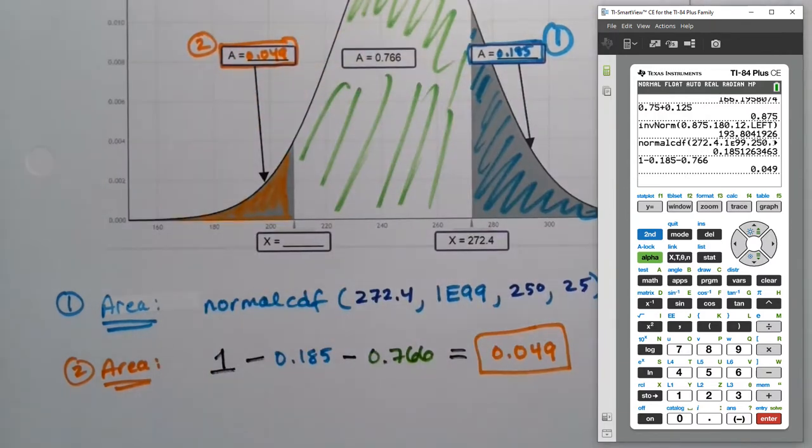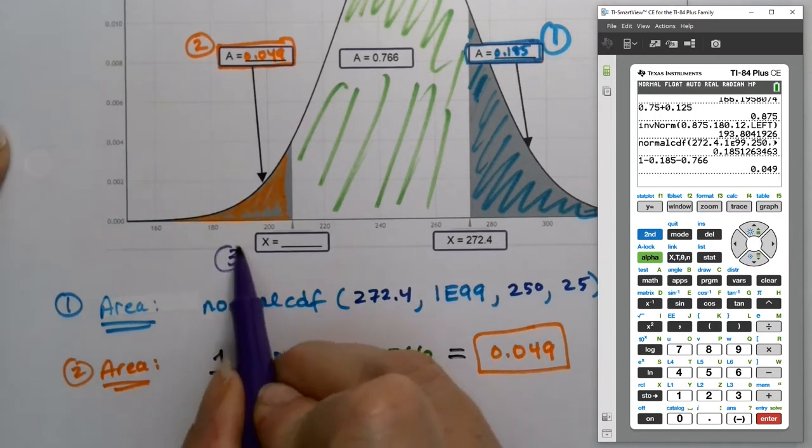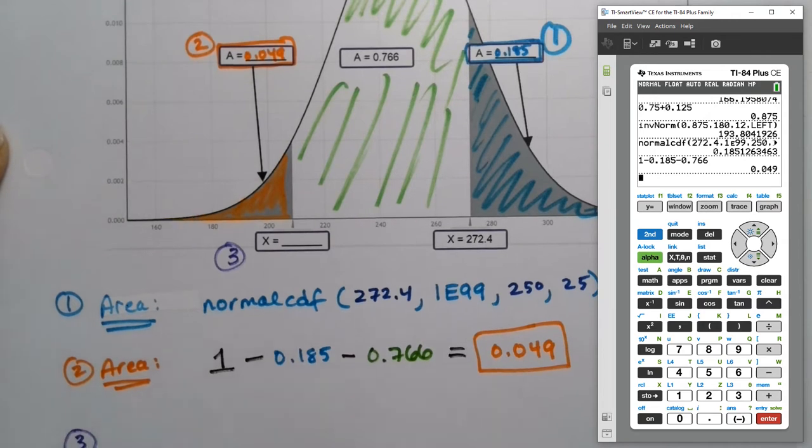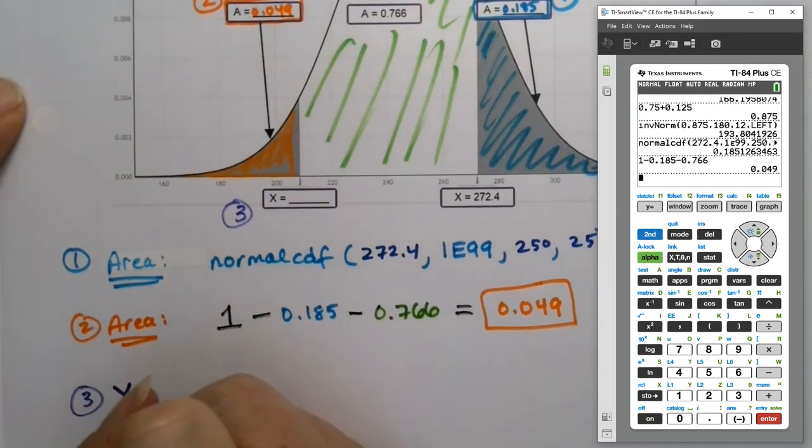All right, now all I'm looking for is the last x value, which I'll number number three, because I'm finding it third, which is an x value, not a z-score. Okay, let's go back.